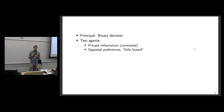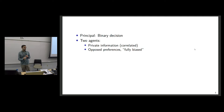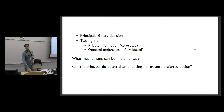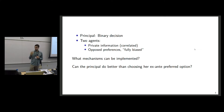We consider the simplest possible setting: a principal who has to take a binary decision, and two agents that hold private information relevant to the principal's preferences. This information can be correlated in any way. The agents have opposed, fully biased preferences — the first agent always prefers the first decision, the second always prefers the second, no matter what their information. Only the designer cares about the information, so the agents are what we call fully biased.